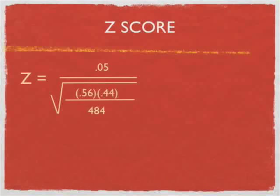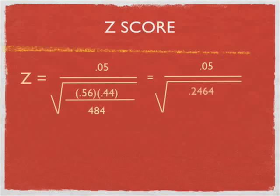Let's continue that on. 0.05 divided by the square root of 0.2464, which is 0.56 times 0.44 divided by 484.